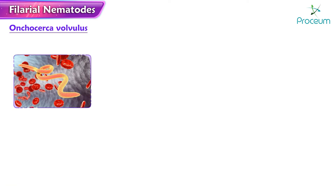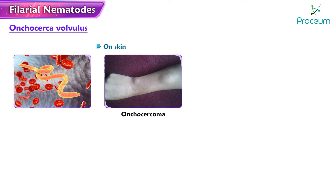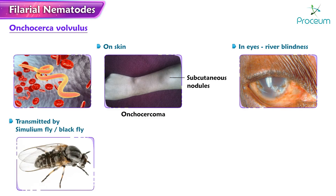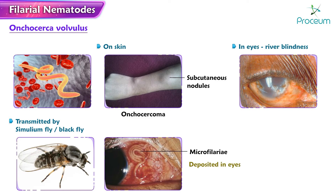Onchocerca volvulus causes skin and eye diseases. On the skin it manifests as the formation of subcutaneous nodules called onchocercomas. In the eyes, it leads to river blindness. It is transmitted by the Simulium fly or black fly, and microfilariae are deposited in the eyes of those residing near riverbeds. The drug of choice is ivermectin.